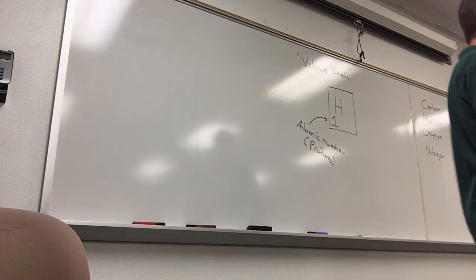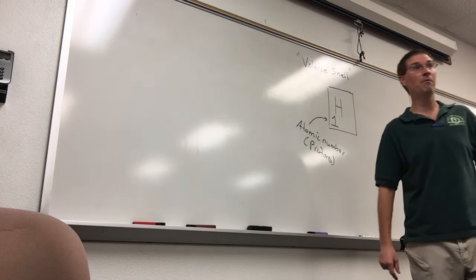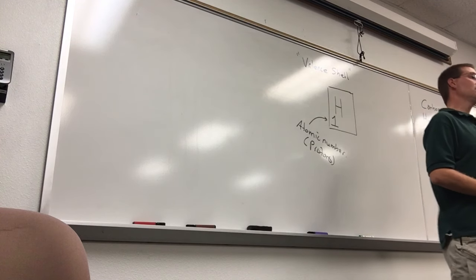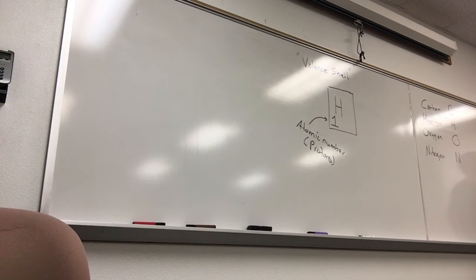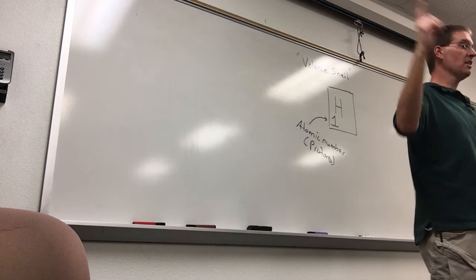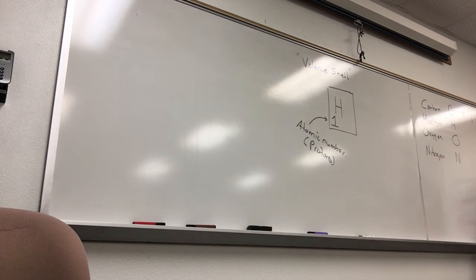The periodic table is divided into horizontal rows called periods — hence the term periodic table. Hydrogen and helium are in the first row, period one. The second period includes lithium, beryllium, boron, carbon, nitrogen, oxygen, fluorine, and neon. The third period starts with sodium, magnesium, and so on. The fourth period begins with potassium, and so on.